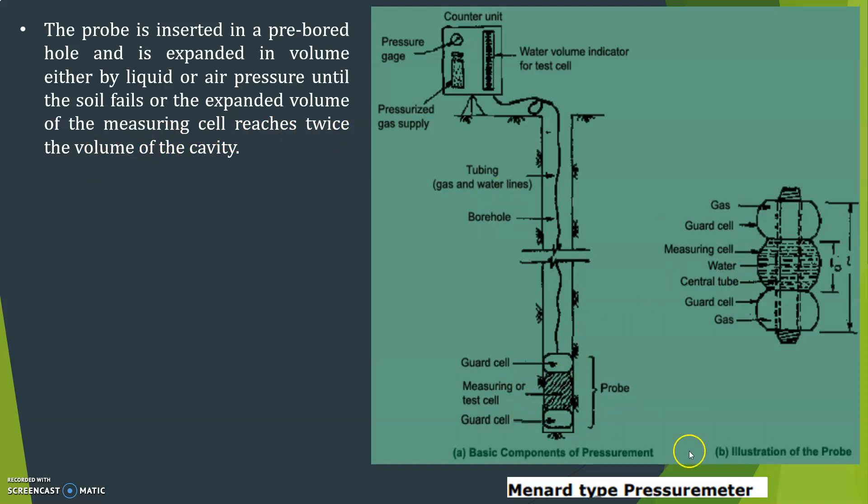You can see here this is a guard cell, this is a probe, this is separately drawn here also. Probe, this is a gas, guard cell and measuring cell, water and this is a central tube and this is again guard cell and this is a gas. So the probe is inserted in a pre-bored hole and is expanded in volume either by liquid or gas until the soil fails or the expanded volume of the measuring cell reaches twice the volume of the cavity.